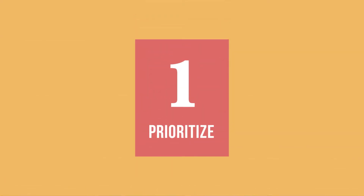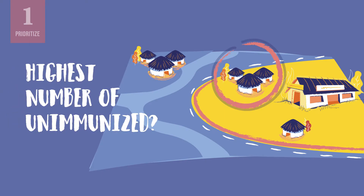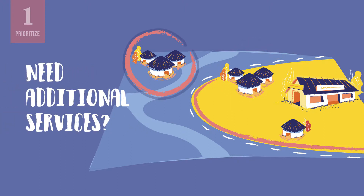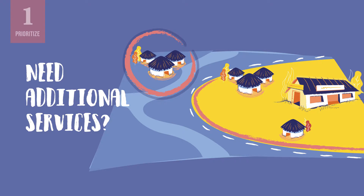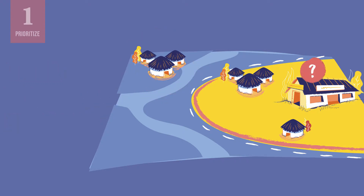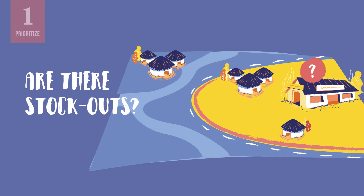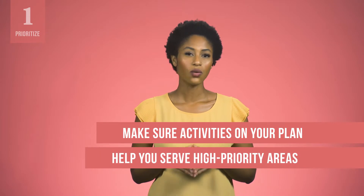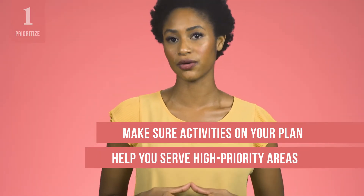Let us practice filling one out together. First, it is important that you always start this process with two or three prioritized problem areas in mind. Which communities have the highest number of unimmunized children, the lowest coverage rates, or the highest dropout rates? Which hard-to-reach communities may need additional services? Are there problems with cold chain equipment or stockouts that need focused attention? Make sure the activities on your action plan will help you serve and do better in these high-priority areas.